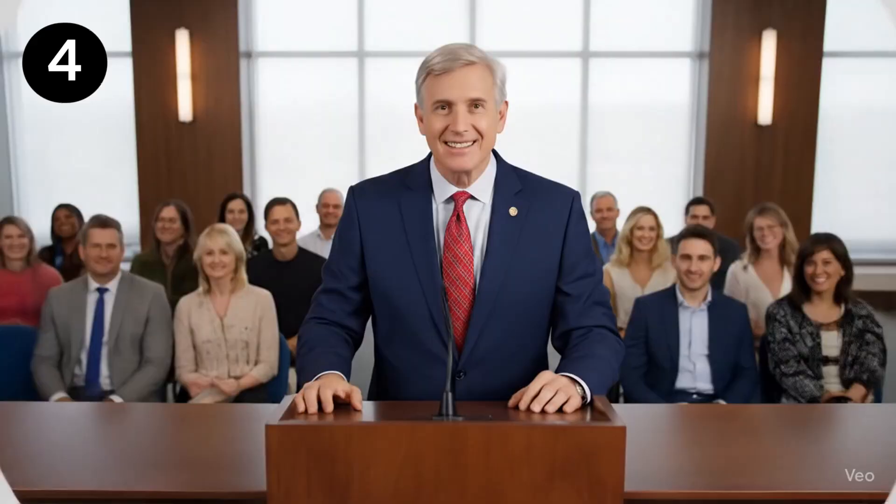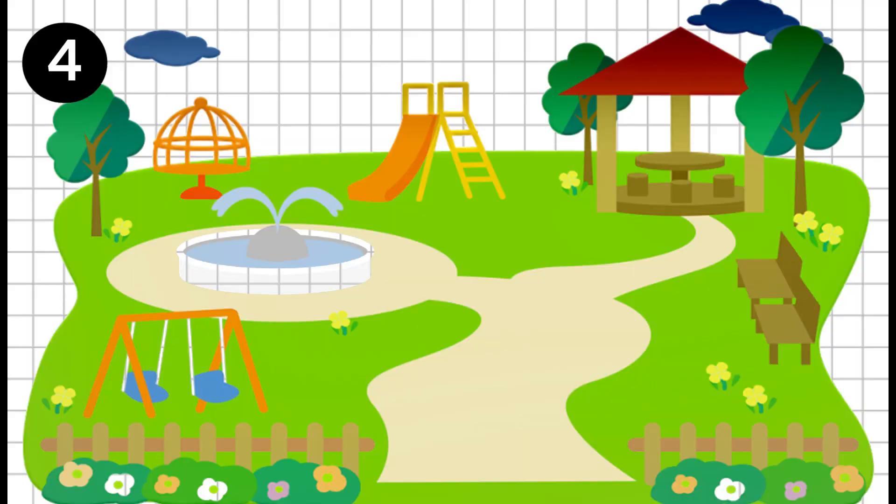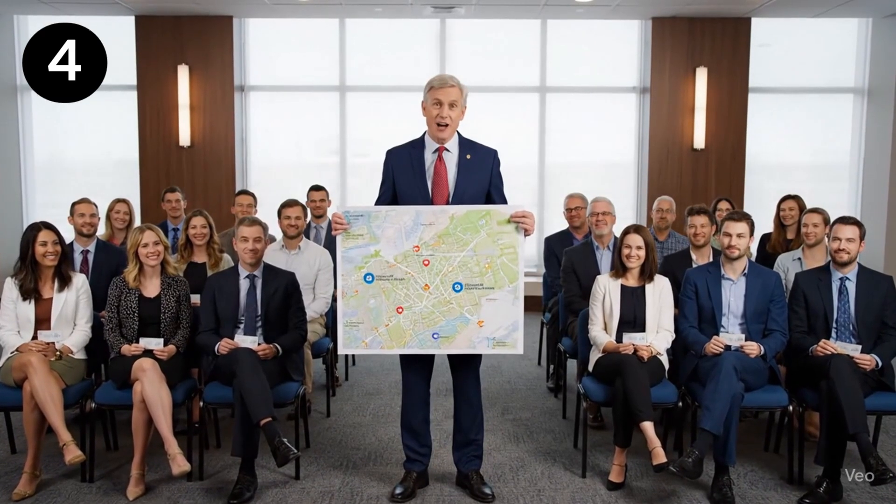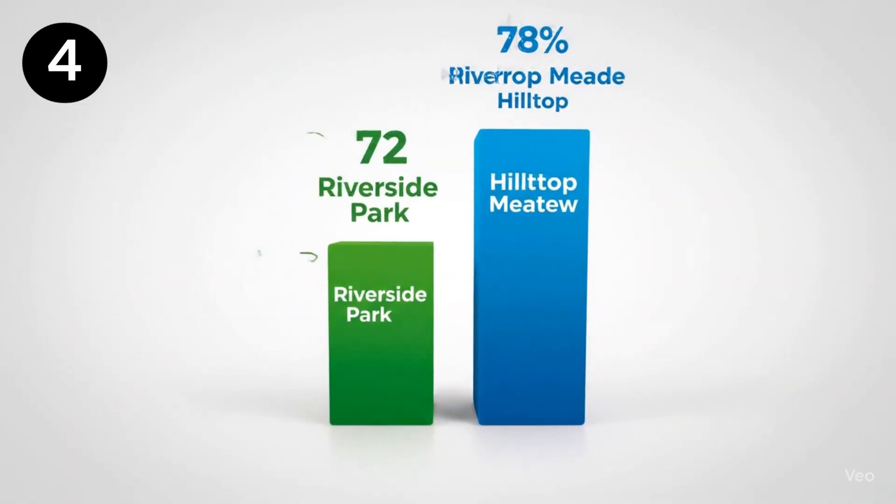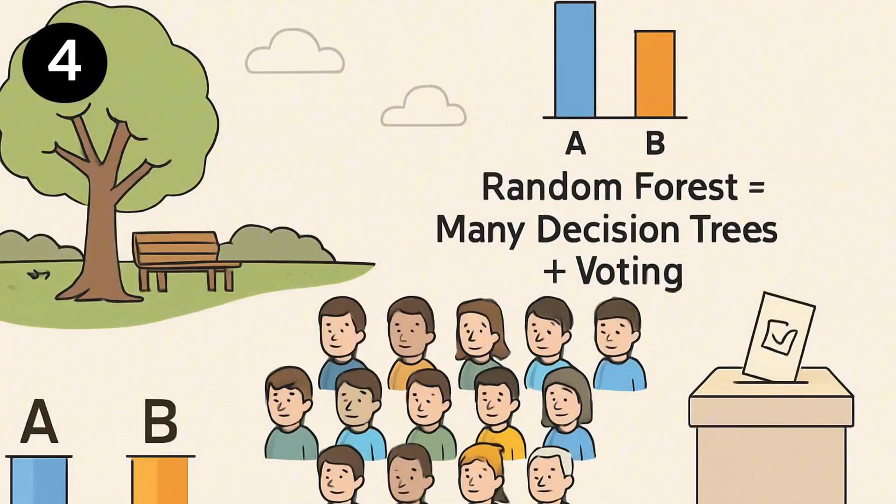Imagine you are the mayor of a city and you have to build a park. There are two possible locations: Location A and Location B. You have to take people's consent on where to build the park. What you do is randomly pick 100 people from the city and ask them to vote for one of these locations. Whichever location gets more votes, the park will be built there. You are taking votes from randomly chosen people, and whichever location gets the highest vote wins. This is nothing but random forest.